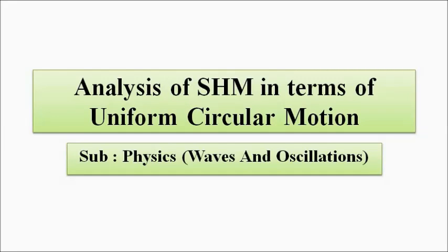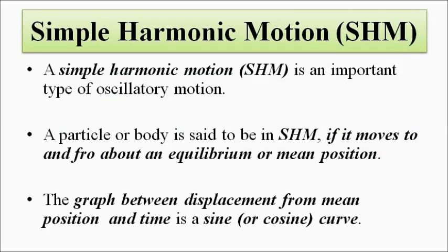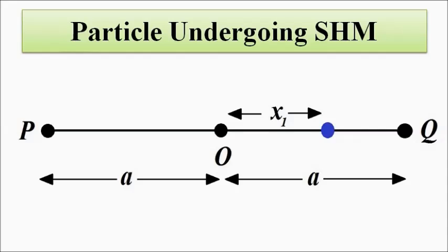We'll analyze simple harmonic motion in terms of uniform circular motion and correlate the two. Simple harmonic motion is an important oscillatory motion in which a body exhibits to-and-fro movement about an equilibrium or mean position. The particle initially at O moves to and fro about this point, from O to P to Q and back, moving to the extreme left and right up to a maximum displacement equal on both sides.